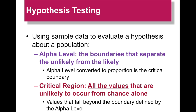We're going to use sample data to evaluate hypotheses about a larger population. The alpha level is the boundary that separates the unlikely from the likely. Alpha levels converted to proportions set that critical boundary. If you have a one-tailed test or a two-tailed test depends on whether you have to split that alpha. If alpha is 0.05 and it's a one-tailed test, the whole critical region is that 5%. But if it's two-tailed, you split the alpha, so 0.05 becomes 0.025 on both sides.